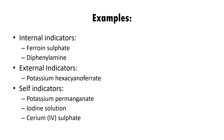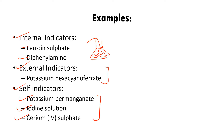These are some examples of indicators: internal indicators, external indicators, and self-indicators. Ferroin sulfate and diphenylamine are internal indicators — these are added to the sample solution, one or two drops. External indicators are not commonly used now; potassium hexacyanoferrate is one example. Under redox titrations, self-indicators include potassium permanganate, iodine solution, and cerium sulfate — they all possess color by their own and the color change can be observed very easily when the oxidation or reduction reaction is taking place in the flask.